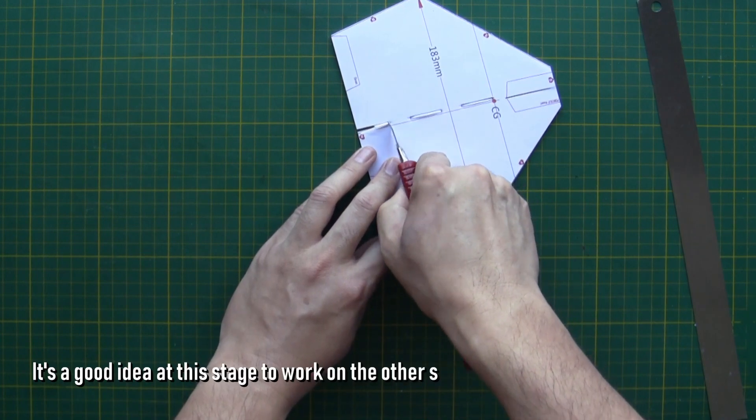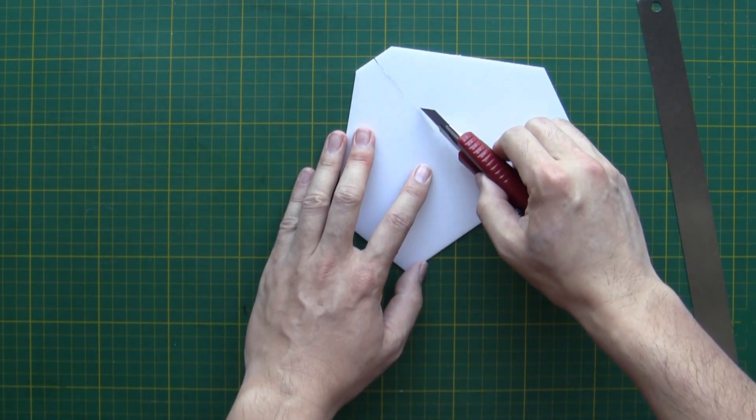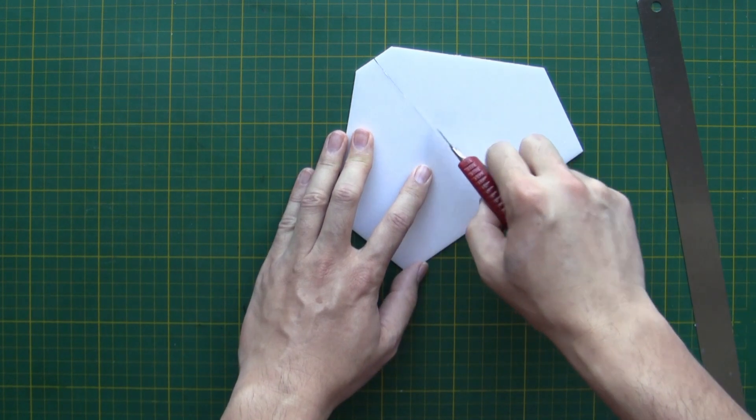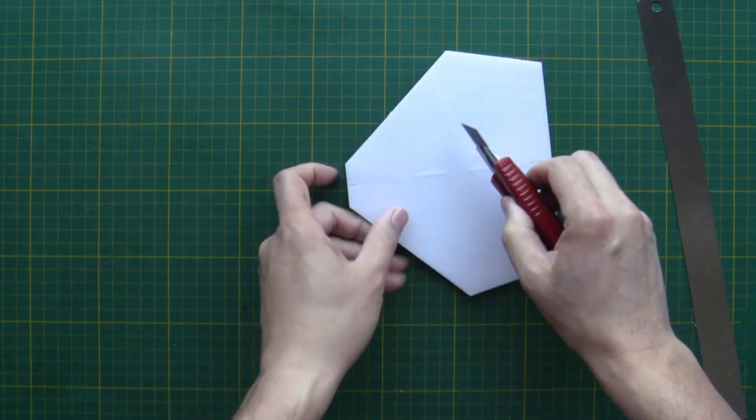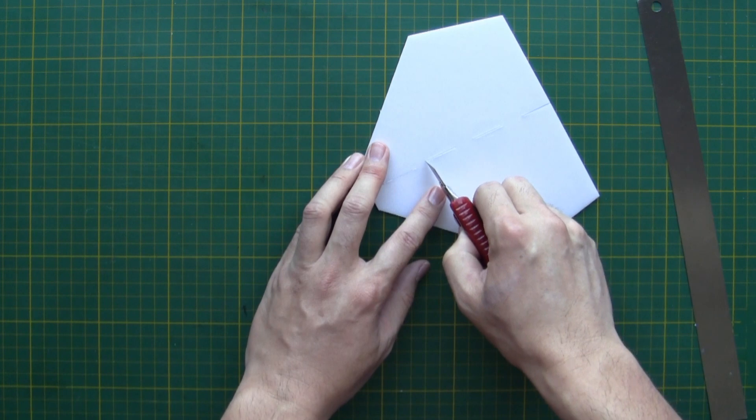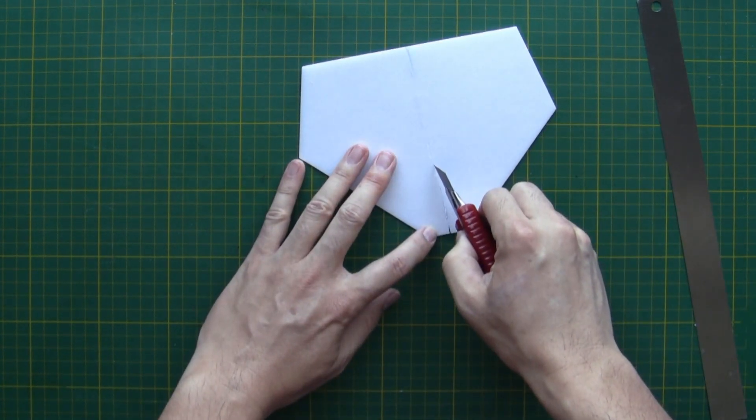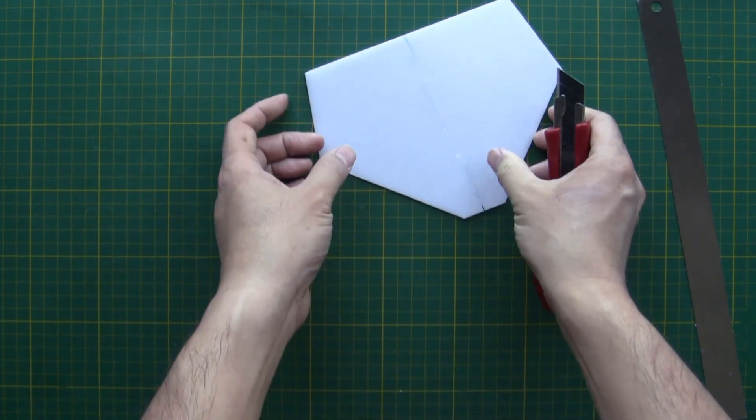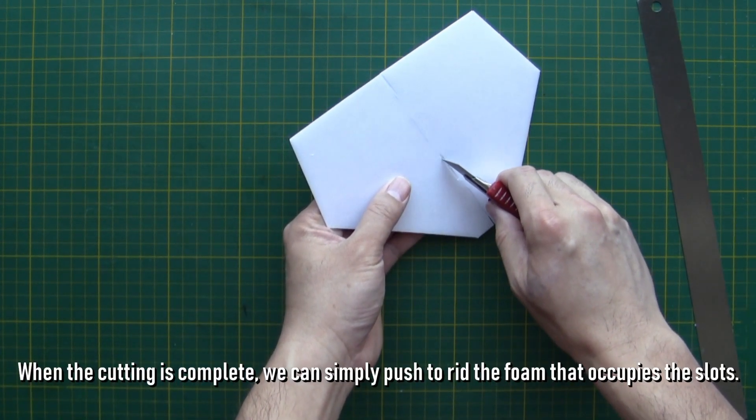It's a good idea at this stage to work on the other side to finish the cutting of the slots. When the cutting is complete, we can simply push to rid the foam that occupies the slots.